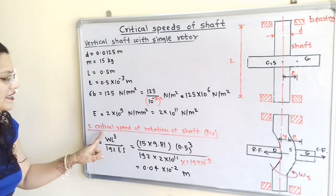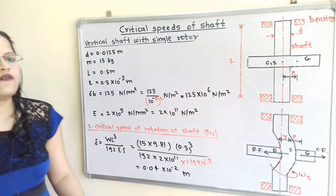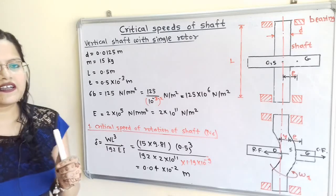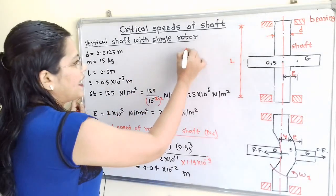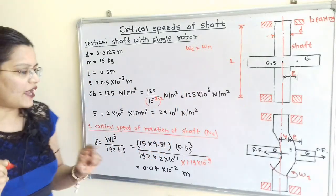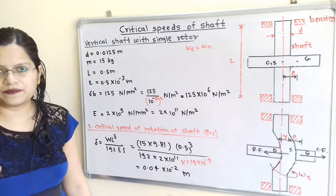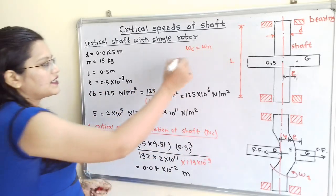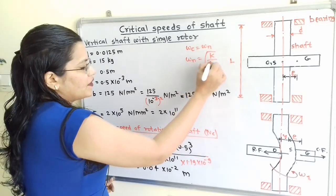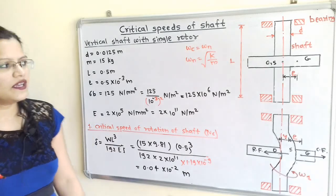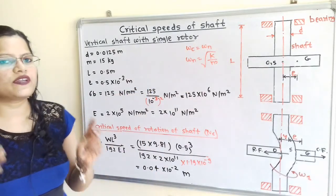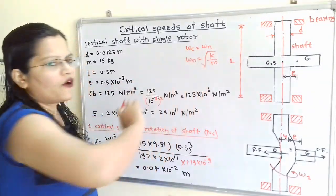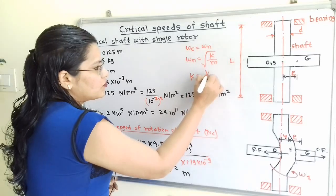As per the given data, we have to find the critical speed of rotation of the shaft. At the critical speed, the shaft rotates at its natural frequency. That is, omega_C equals omega_N. To find critical speed Nc, we use the relation omega_N = sqrt(K/M), where K is the stiffness of the shaft. To find stiffness K, we first need delta, the static deflection. K = W/delta.